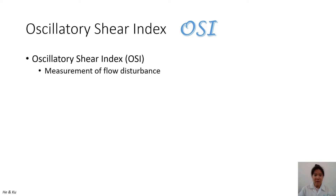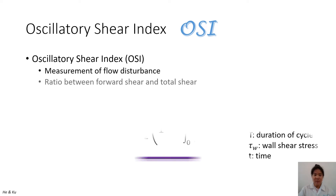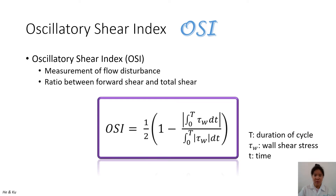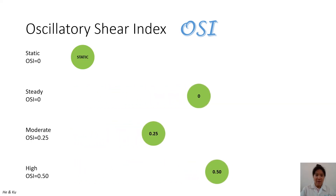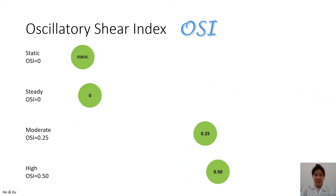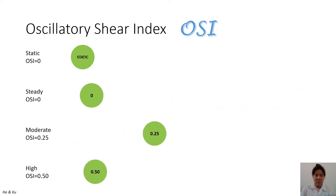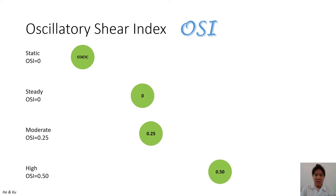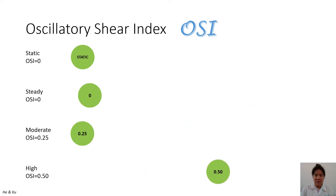OSI, or oscillatory shear index, is a measurement of flow disturbance. Its equation quantifies the ratio between forward shear and total shear, where big T is the duration of cycle, tau is the wall shear stress, and small t is time. The OSI value ranges between 0 and 0.5. When OSI is 0, flow remains static or steady. At OSI of 0.25, there is moderate oscillation, and at 0.5, flow is a full oscillation.